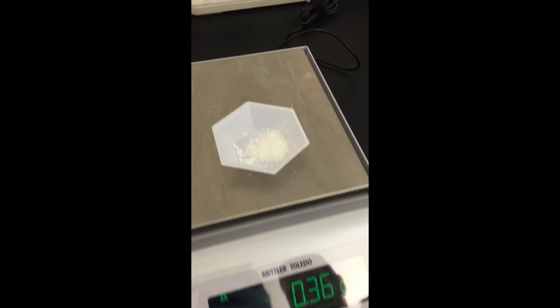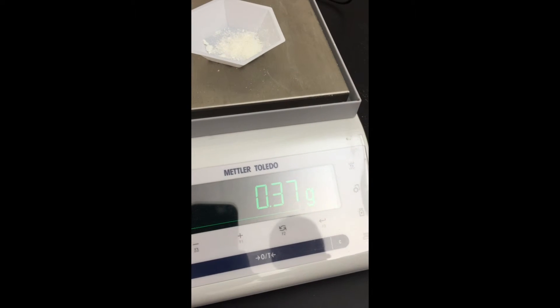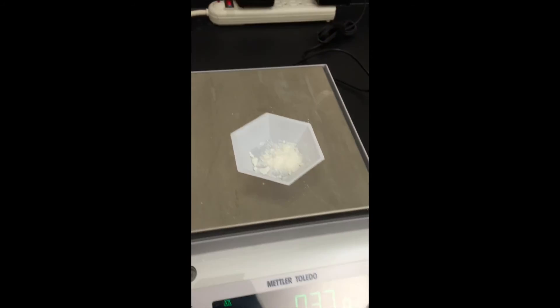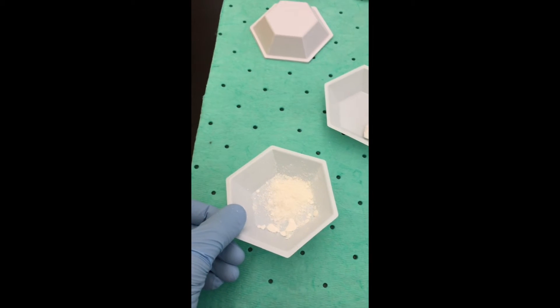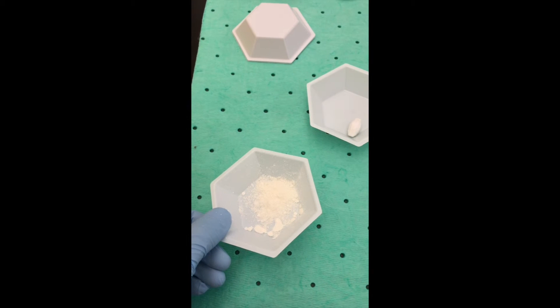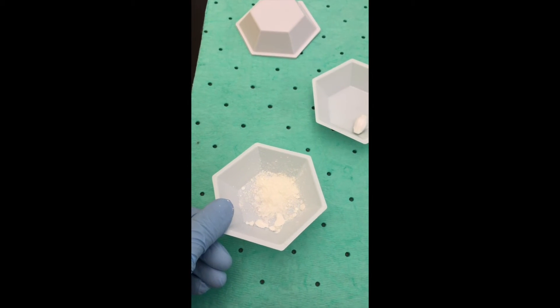So, with our final product filtered out and weighed, it looks like we come to 0.37 grams in total. We've got our final product, we are going to obtain a melting point and calculate percent yield.